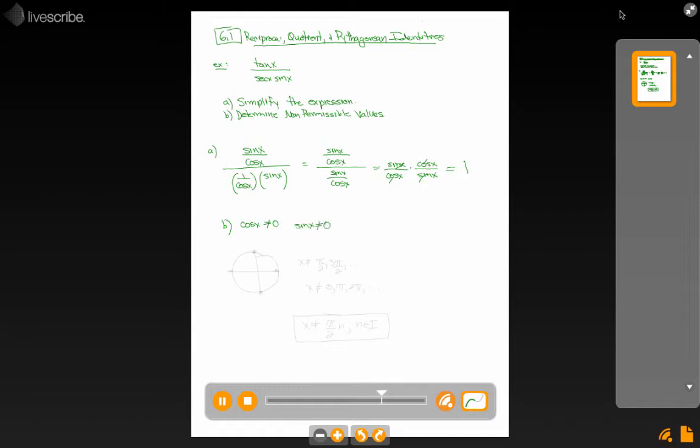So in a previous example, we solved these, but in case you haven't looked at that one, cos x equals 0 when x is pi over 2, 3 pi over 2, so x can't be pi over 2, 3 pi over 2, etc., so any pi radians after that.